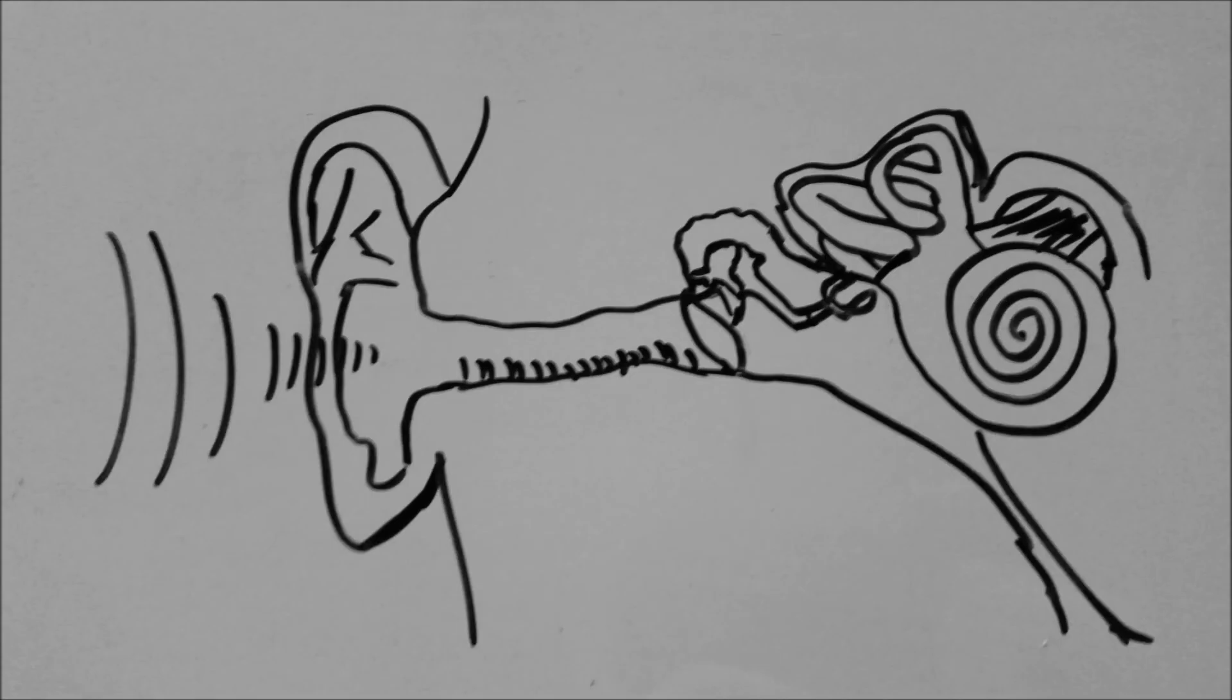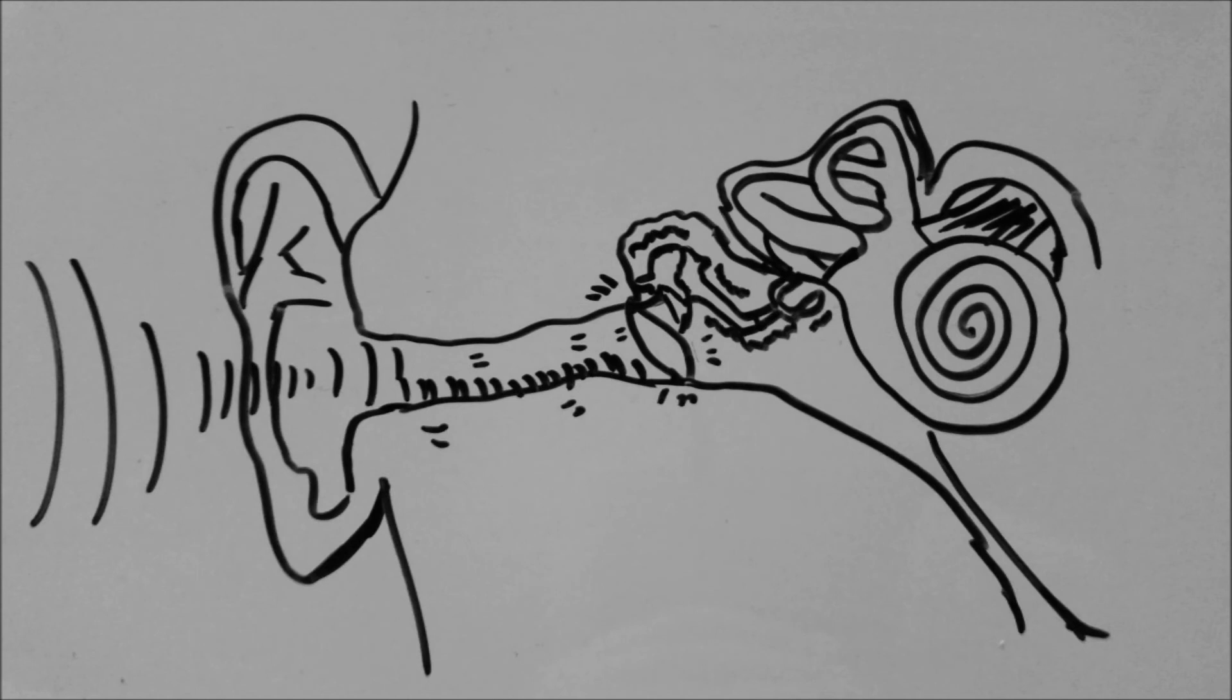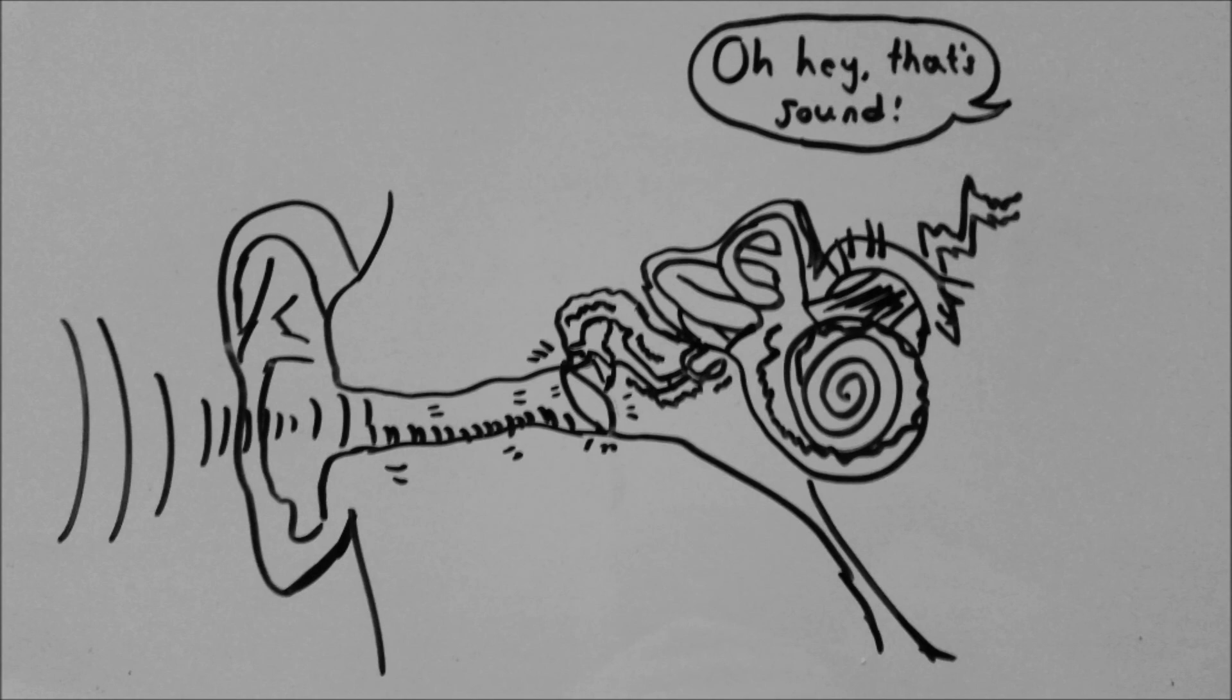The interesting thing about the ear is how perfectly it's built to help you receive sound. Sound waves enter your ear, brush against the tiny hairs in the ear canal, bounce off your eardrum, vibrate three tiny bones, and zip up the cochlea where they transform into electrical signals to help your brain understand what you just heard.